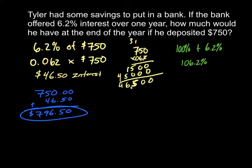which you could actually combine this process into one step, where then you would have 106.2% of $750. And when you multiply that out, you would still end up with $796.50.